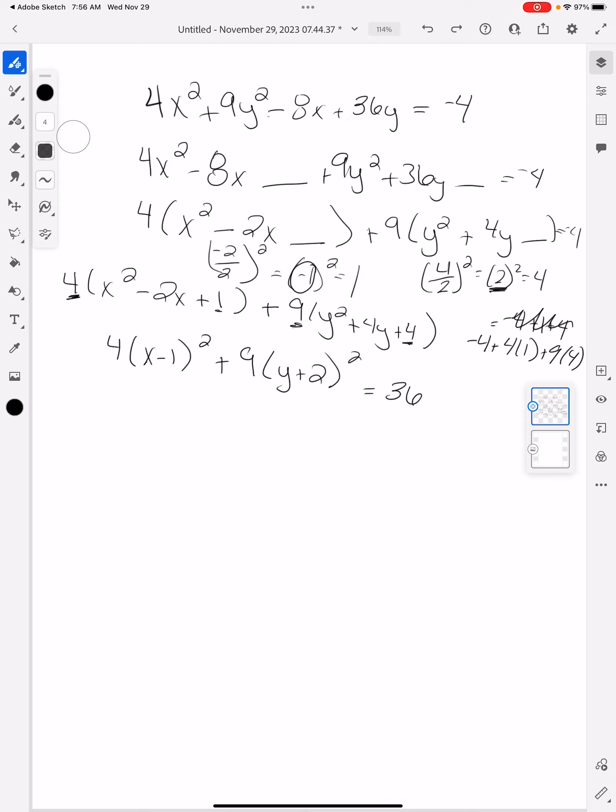And so that equals 36. So this kind of looks like the equation of a circle right now, except that I have numbers in the top and I have numbers in the bottom. And so when I want to get to an ellipse or a hyperbola, you're going to look at the number that's over here. And that number needs to equal 1.